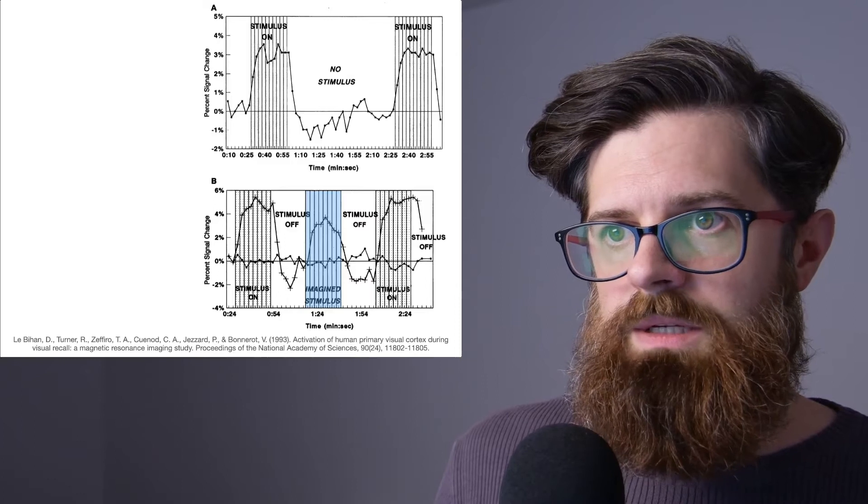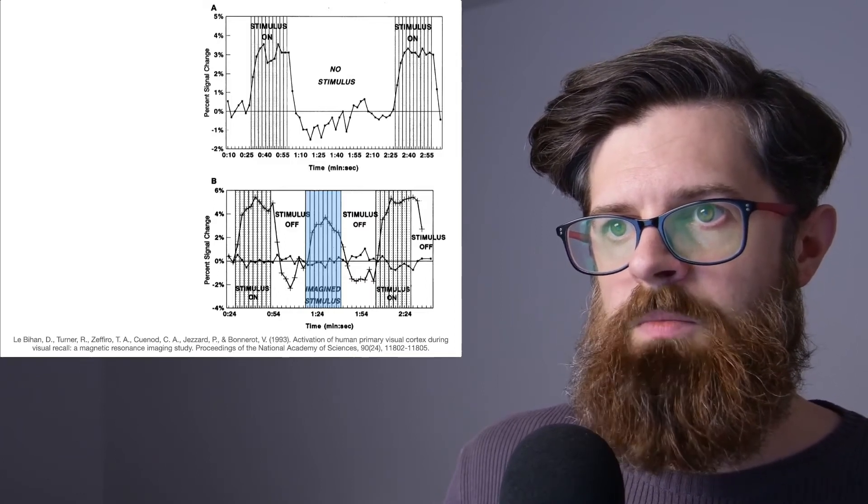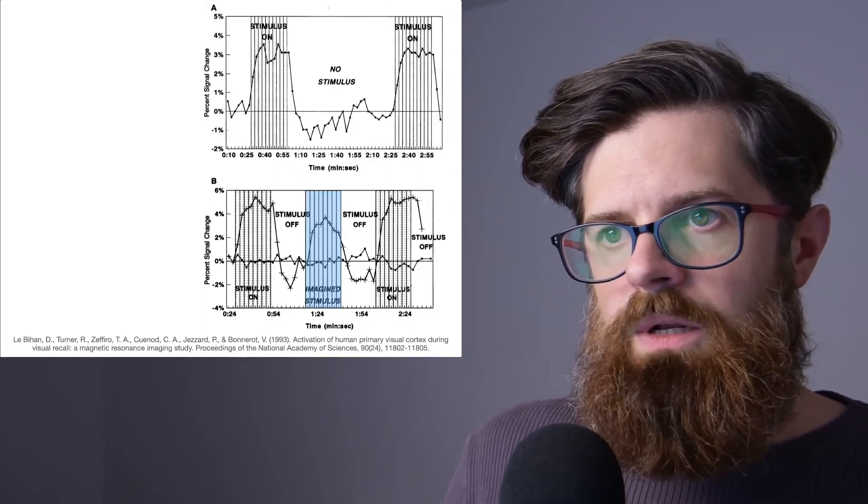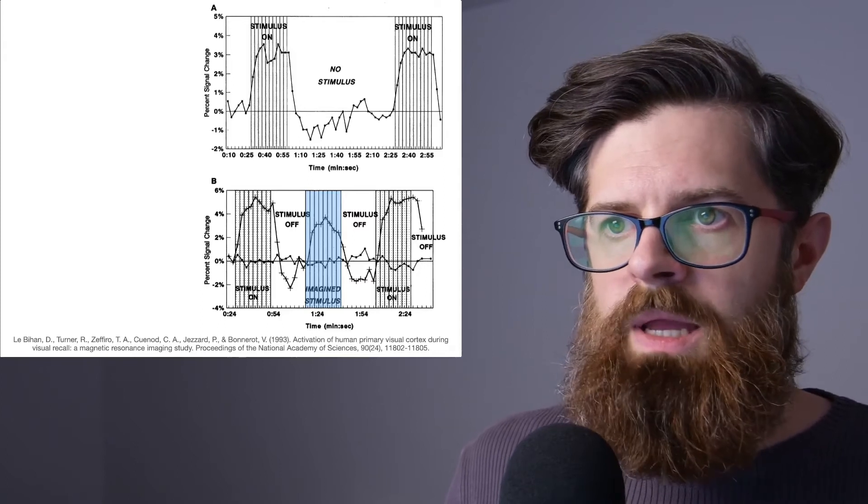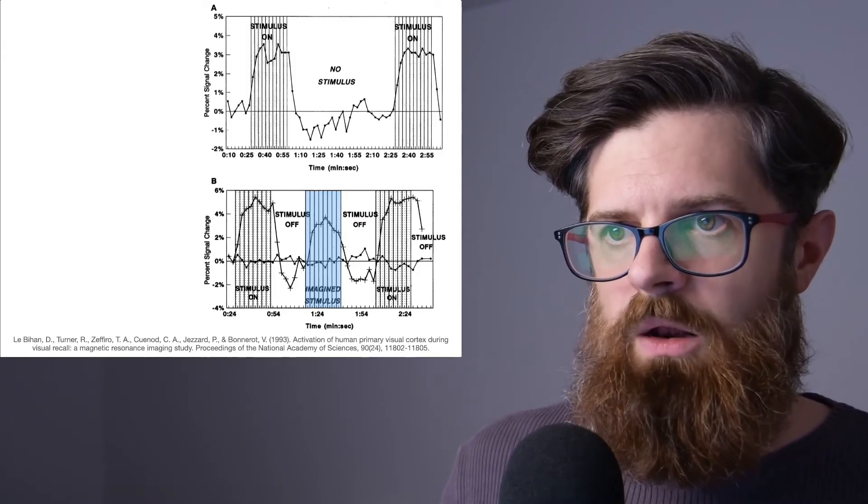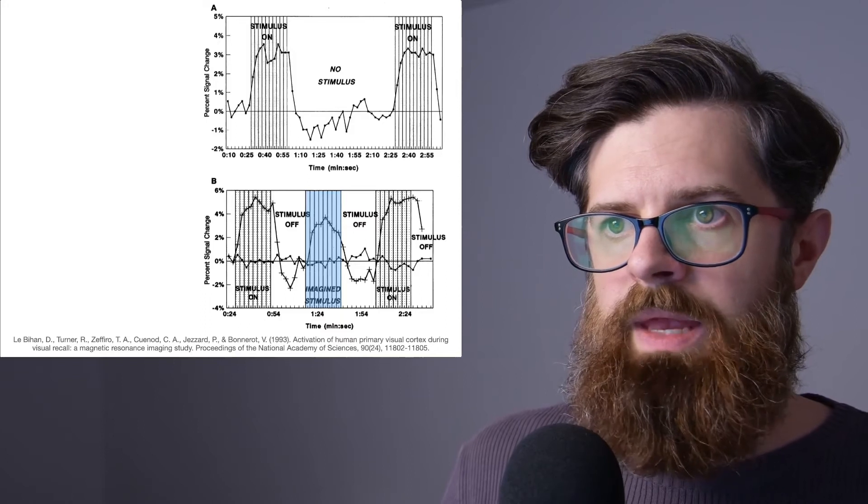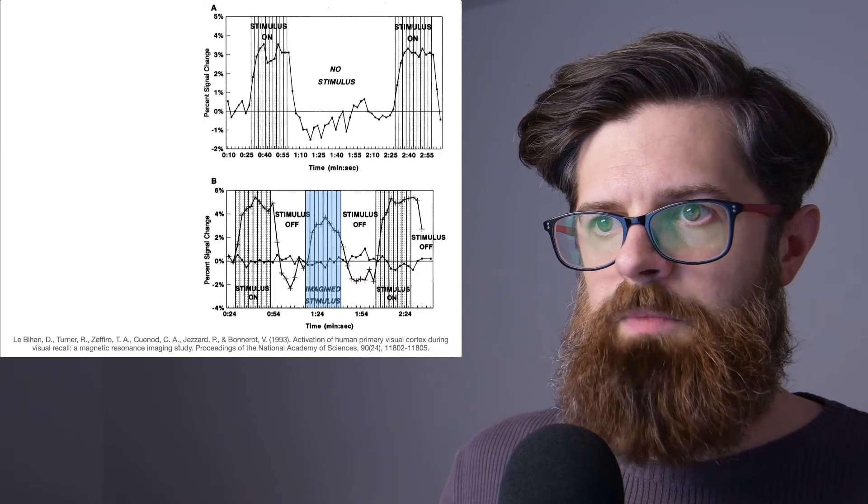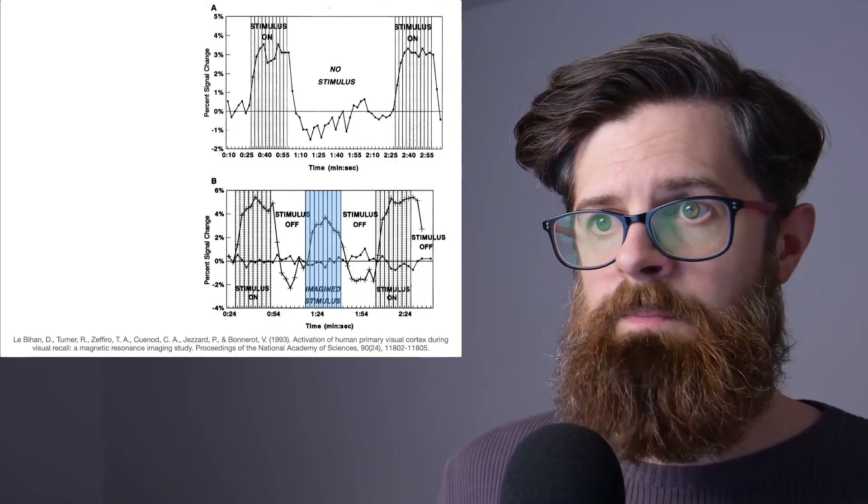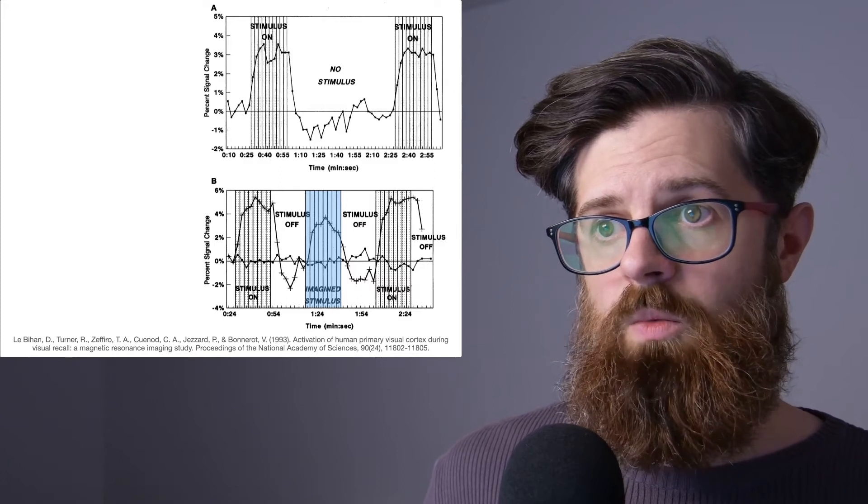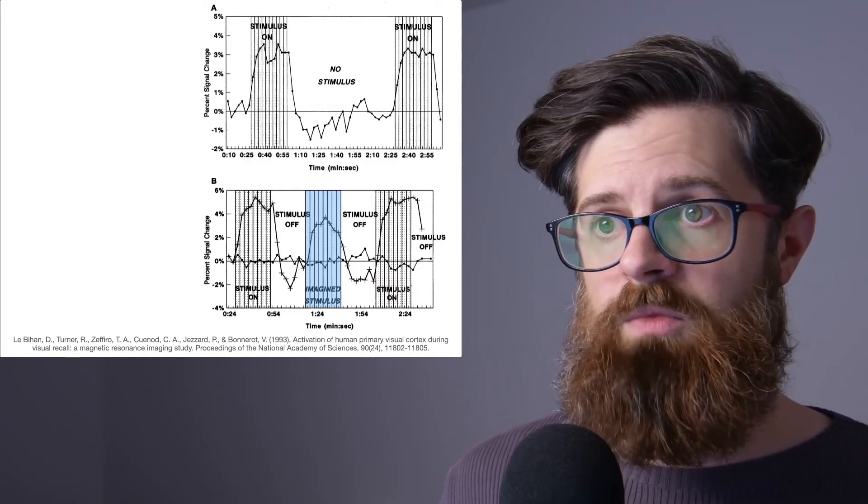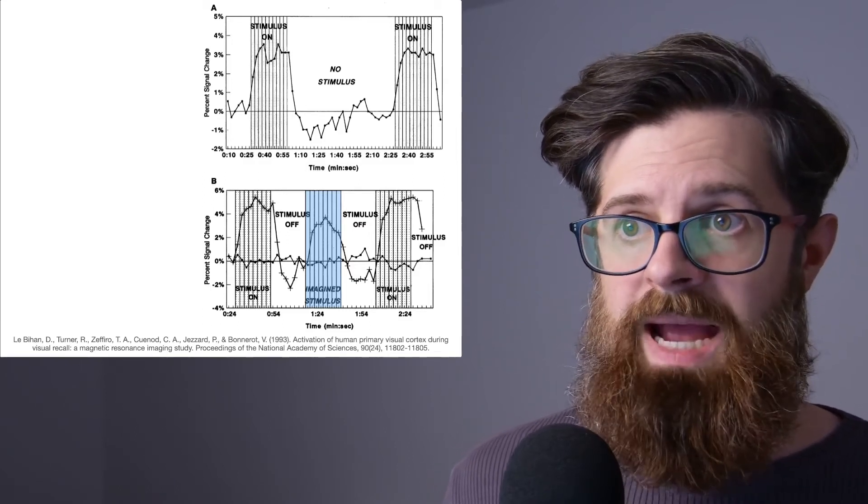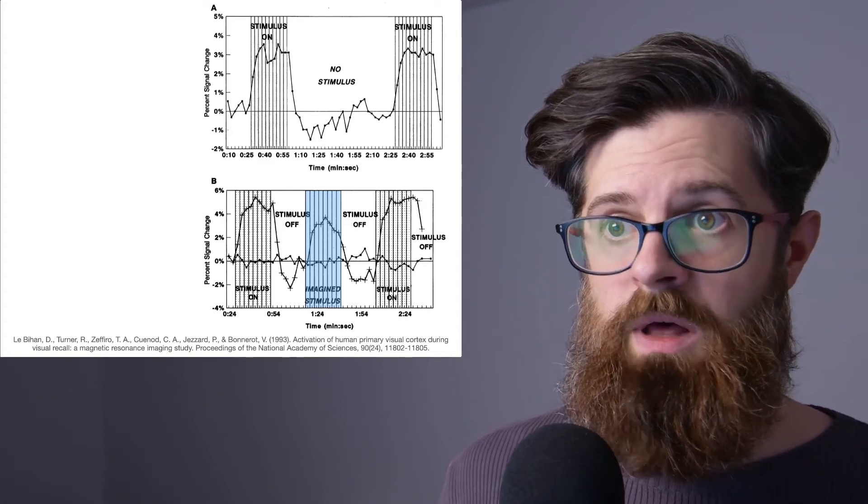Now the second graph that we have here, the second panel labeled B, is the really important one. If we look at the line which is marked by some crosses along that line, this is really the key thing that's going on here. At the beginning of the experiment we can see there was no stimulus and so the activity was low. Visual stimulus was presented and the activity in the primary visual cortex went up. The stimulus went away and the activity went down. So so far nothing new.